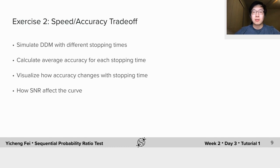In exercise 2, let's look at the speed accuracy tradeoff for fixed time stopping rule. You can now calculate the average accuracy given a stopping time by running multiple repeated simulations.